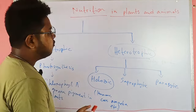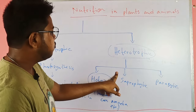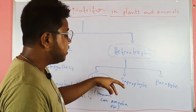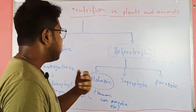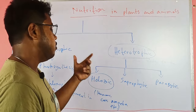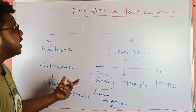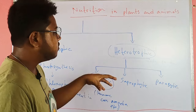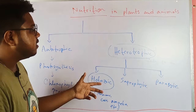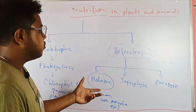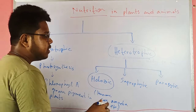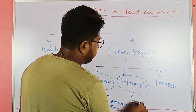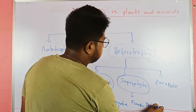Saprophytic nutrition is a type of heterotrophic nutrition where organisms rely on dead or decaying organisms — like dead plants and dead animals — and absorb their nutrition and proteins from them. This involves fungi, yeast, etc.